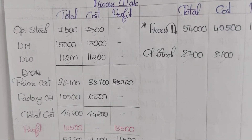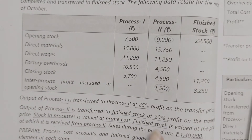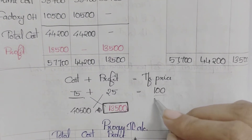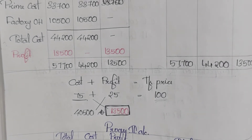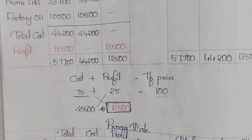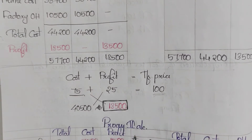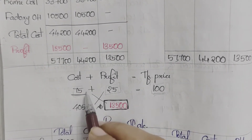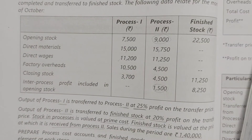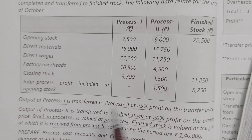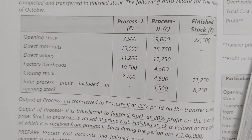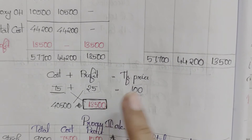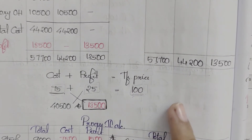Next is the profit element. How much profit is transferred? 25% is profit on transfer price. So if transfer price is 100, then profit = 25 and cost = 75. Process 1 output transferred to Process 2 at 25% profit on transfer price means: cost is 75, profit is 25, transfer price is 100.